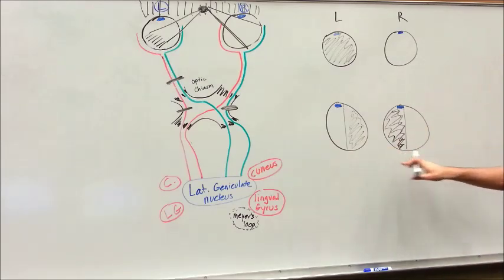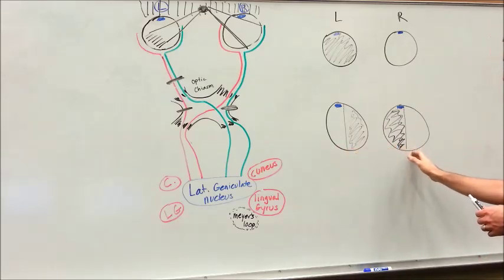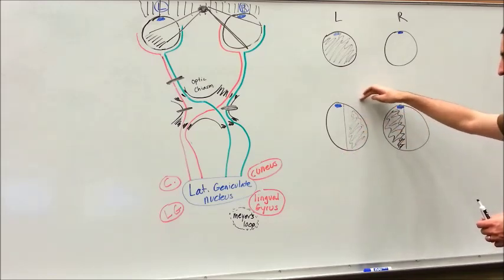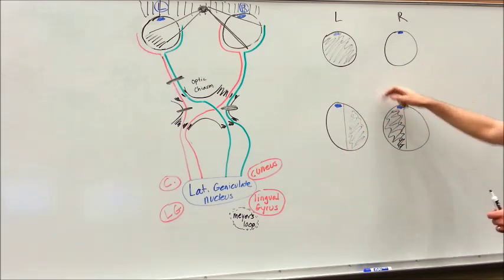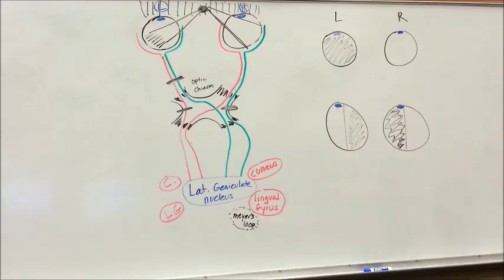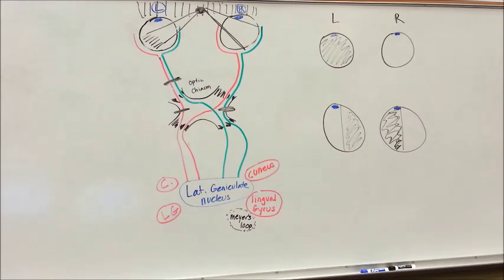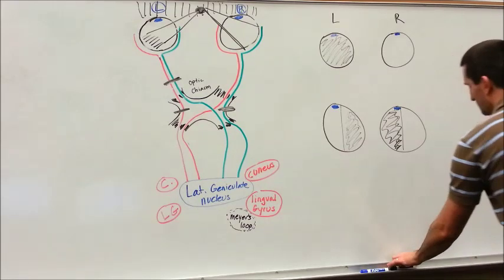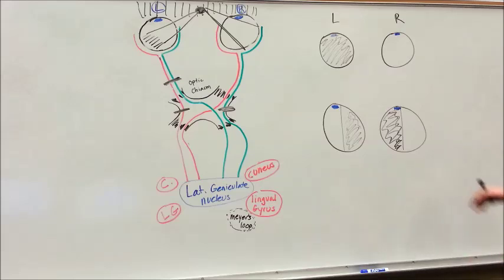Binasal — bilateral, meaning both sides. Heteronymous, meaning it's not the same side on each eye: on the left eye it's going to be the right portion, while on the right eye it's going to be the left portion, meaning it's different portions of each eye. Hemianopsia is only seeing half — hemi meaning half, an meaning without, and opsia meaning the eye. One thing to cover is what can cause total left eye blindness or this binasal heteronymous hemianopsia.